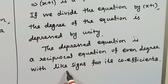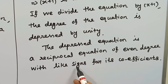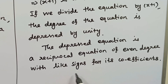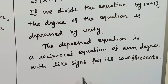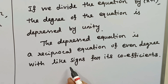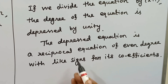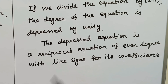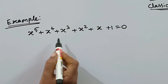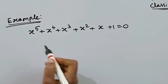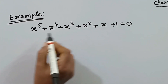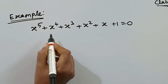The depressed equation is a reciprocal equation of even degree with like signs for its coefficients. So we depress the equation to get an even degree like sign reciprocal equation — that is the standard form. Now let's discuss an example: an odd degree like sign reciprocal equation, and how we convert to even degree like sign.